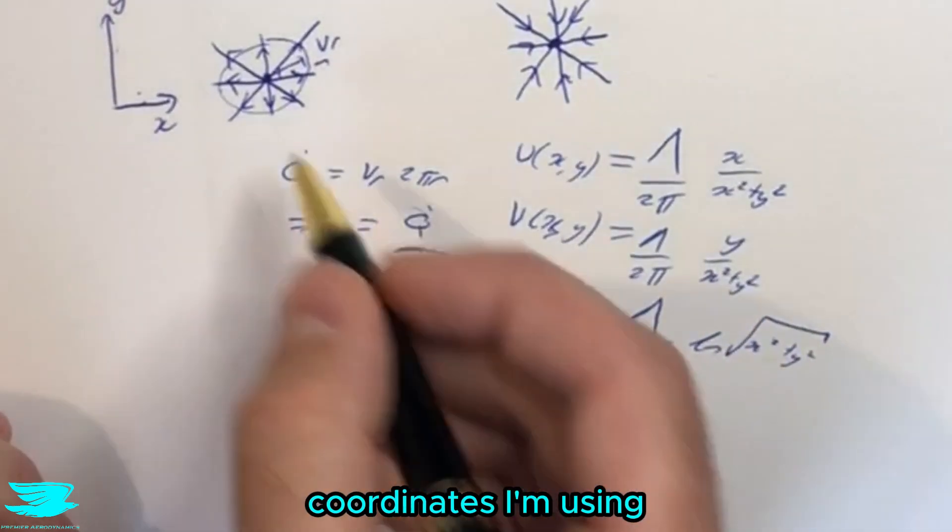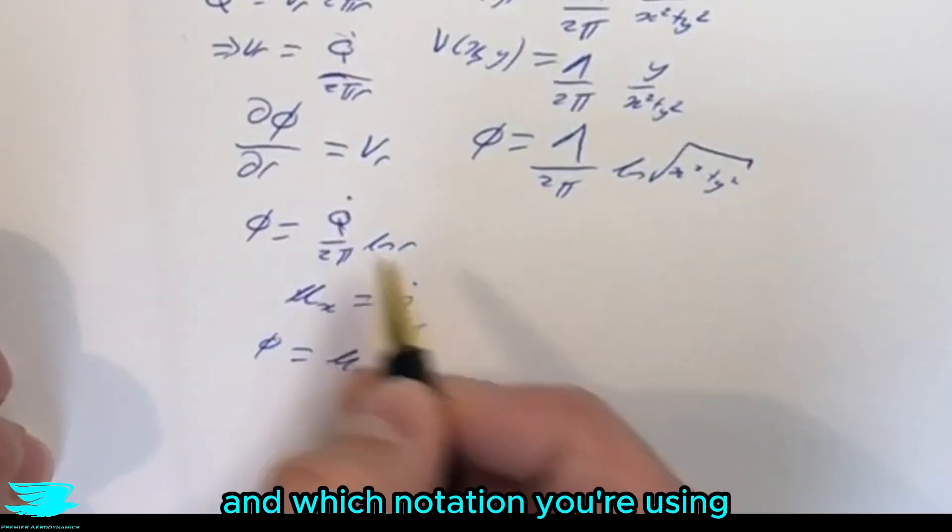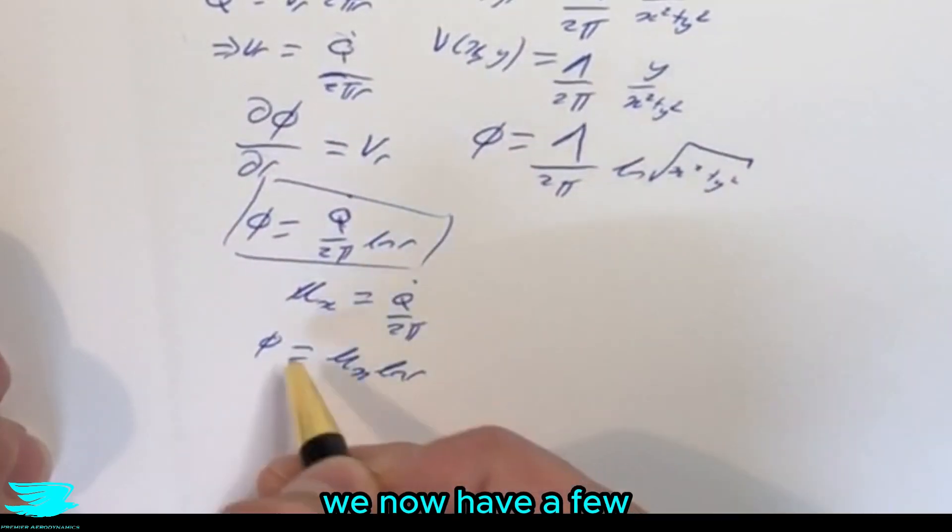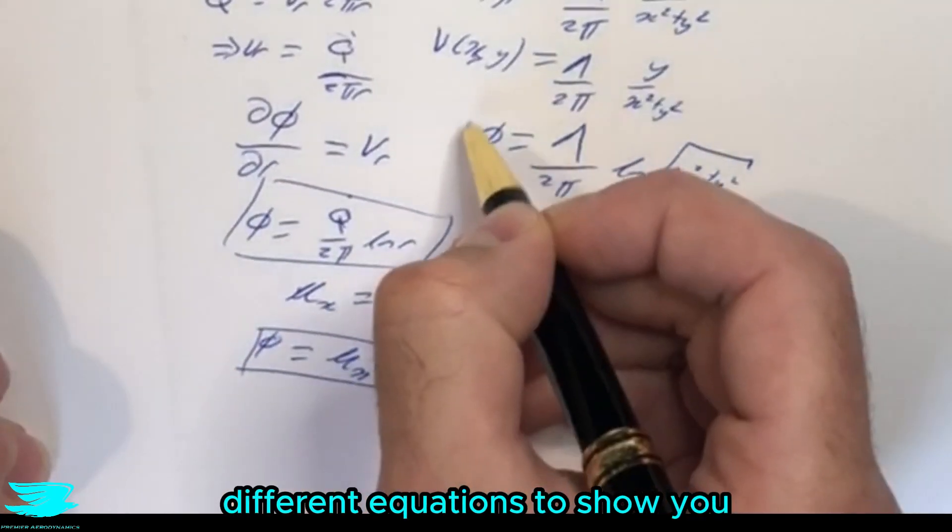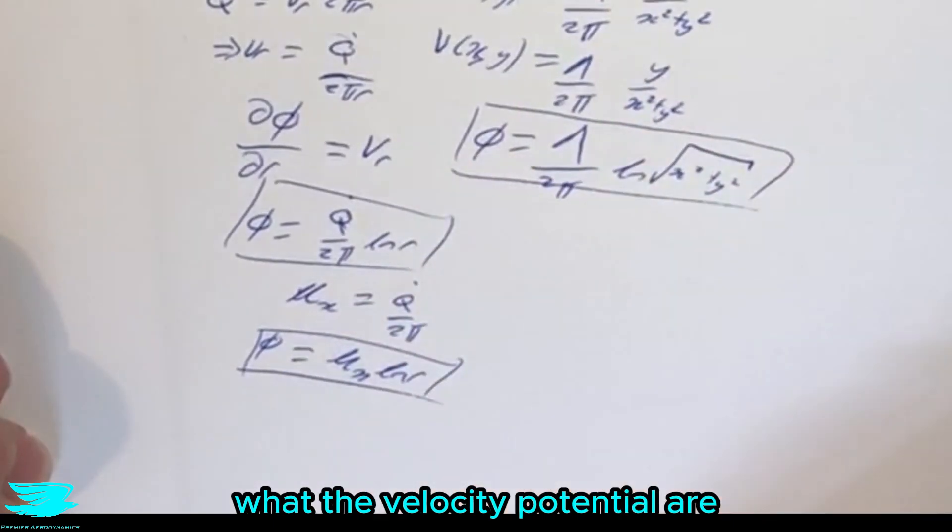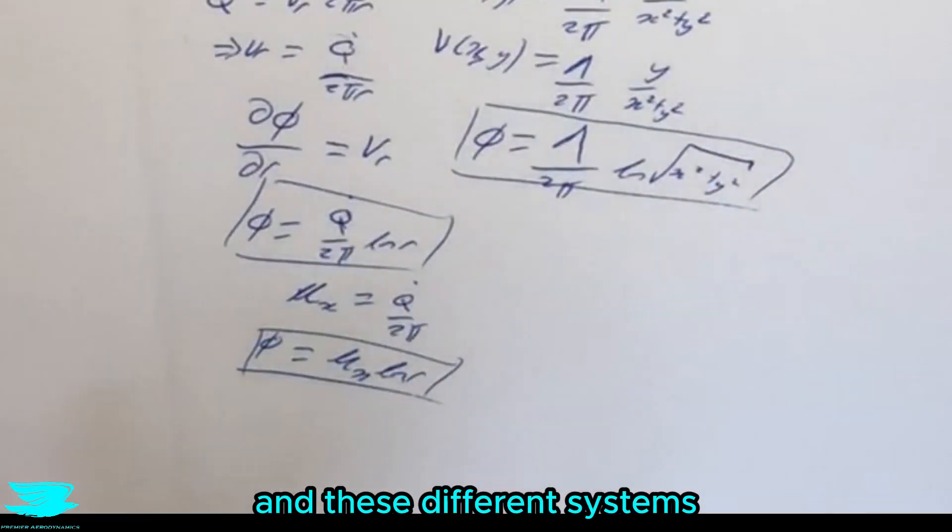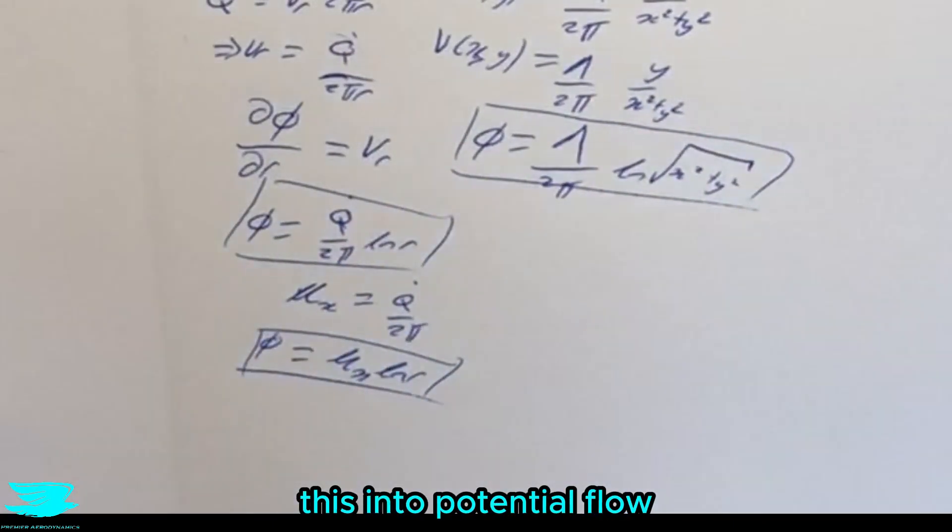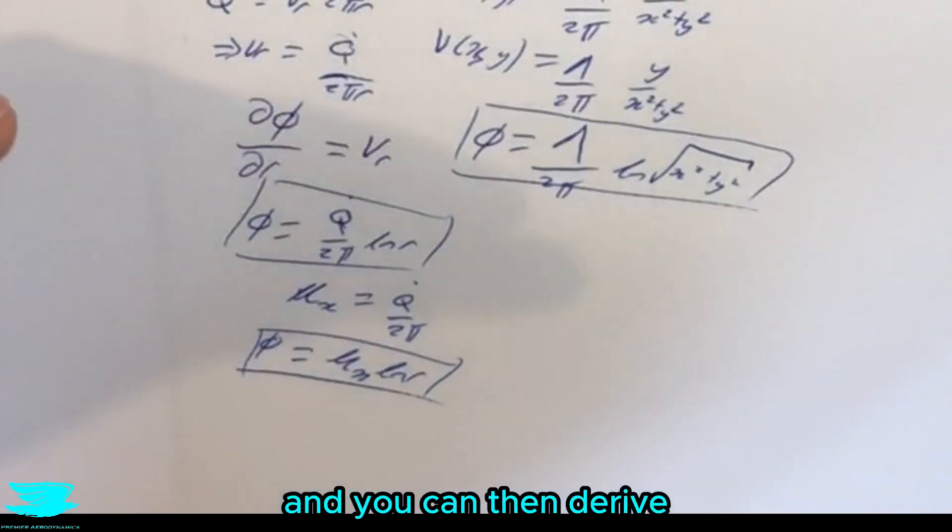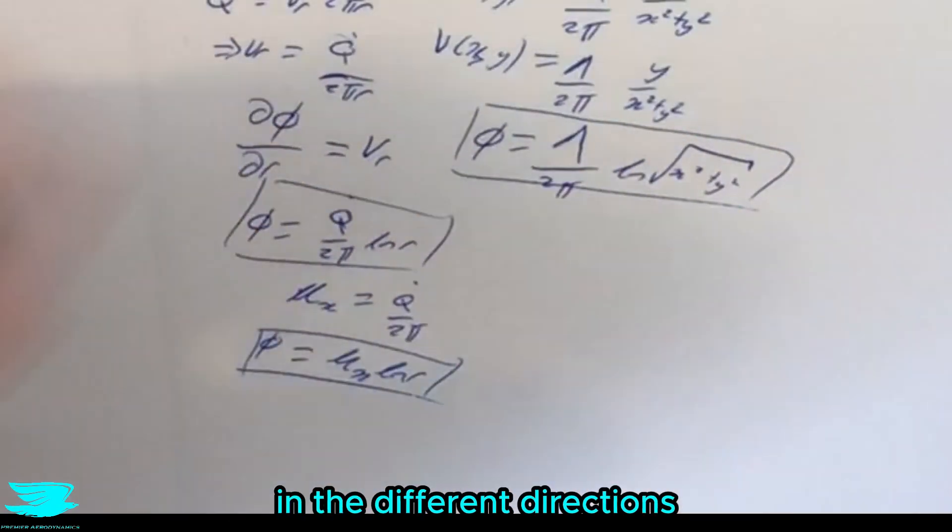So regardless of which coordinate system you're using and which notation you're using, we now have a few different equations to show you what the velocity potential are in these different systems. And then you can put this into potential flow or whatever, and you can then derive it to get what the velocities are in the different directions.